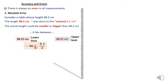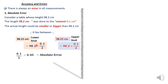Now, 98.2 minus 0.1 divided by 2 gives us the lower limit, and 98.2 plus 0.1 divided by 2 gives us the upper limit. So 0.1 divided by 2 is 0.05. We add 0.05 to 98.2 to get the upper limit, and subtract 0.05 from 98.2 to get the lower limit. This value, 0.05, is what we call the absolute error — the maximum error introduced by giving the height as 98.2 centimeters.